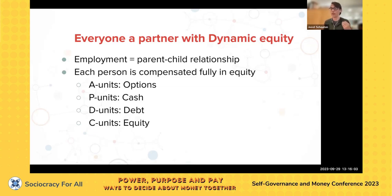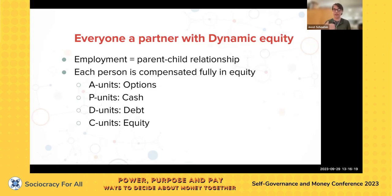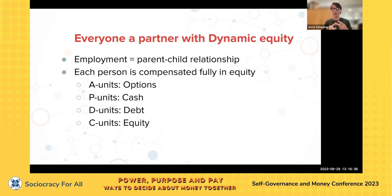There are four share types. There's A units, which kind of equates to stock options. There's P units, which equates to getting cash. There's D units, which is a debt instrument — you get paid out in debt, paid in cash down the road, which is interest-bearing. And then there's C units, which is equity. Right now we only use A and P units, so we only pay in cash or in stock options. Those other two will start to show up later.